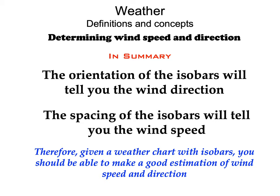To sum things up: if you have a chart with isobars, the orientation of the isobars will tell you the wind direction — slightly across them toward lower pressure, keeping Buys Ballot's Law in mind. The spacing of the isobars will tell you the wind speed. Some charts have a Geostrophic Wind Scale right on them where you can take dividers, measure the distance between two isobars, then read off the geostrophic wind speed. The actual wind speed will usually be a little less than that because the geostrophic approximation doesn't account for friction.